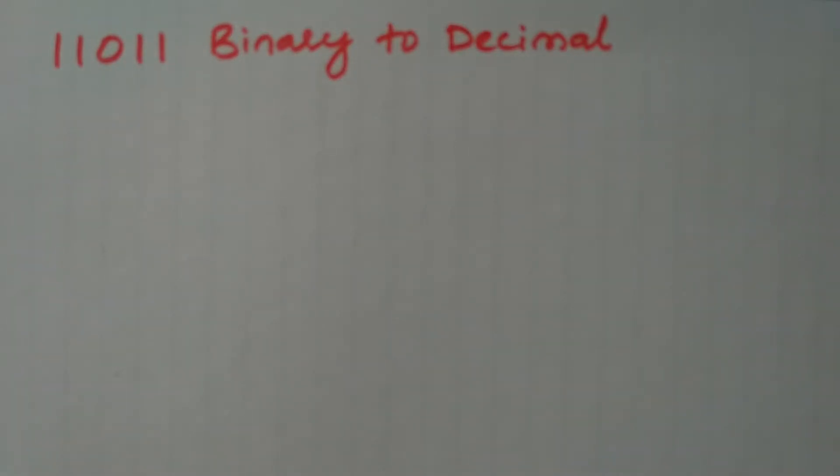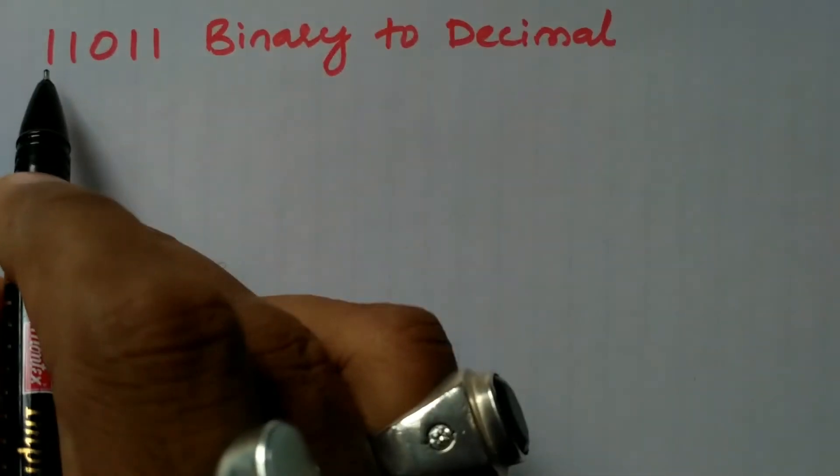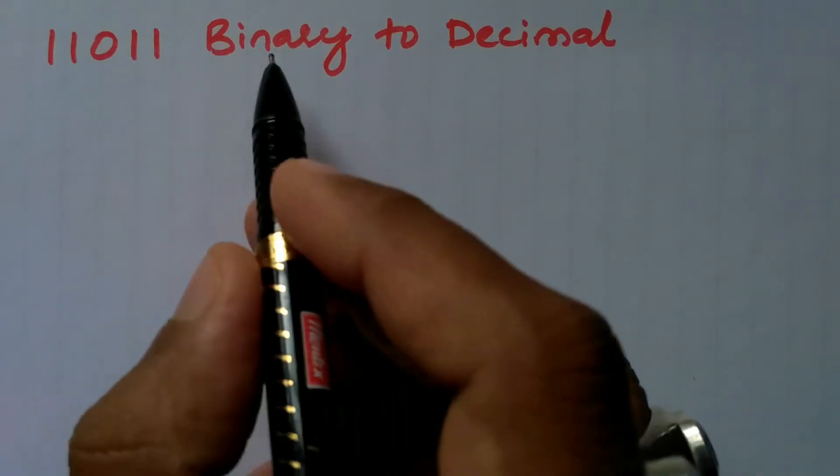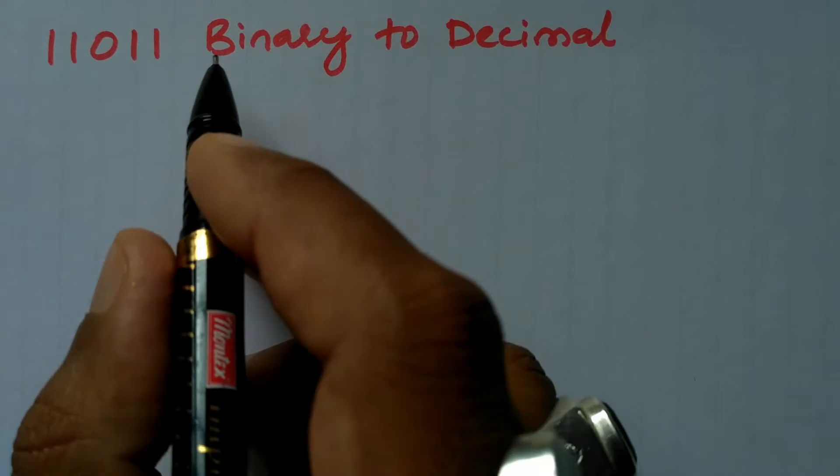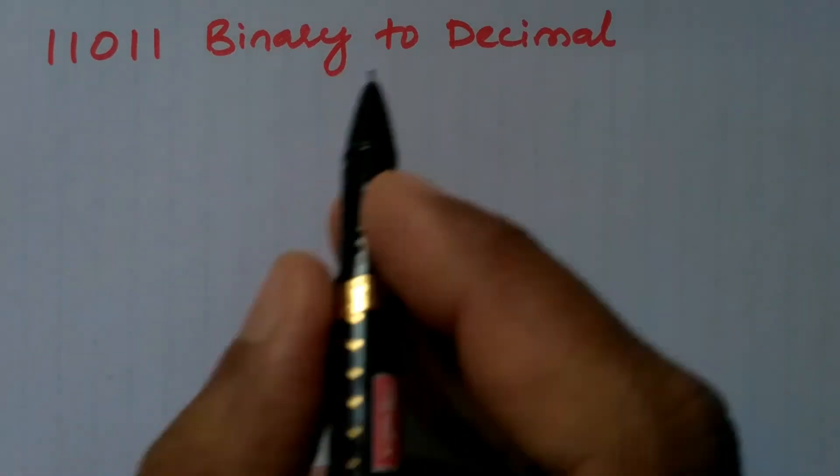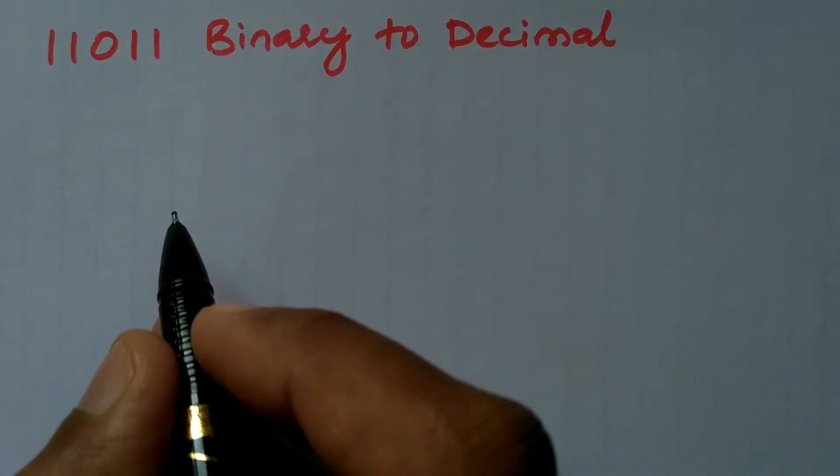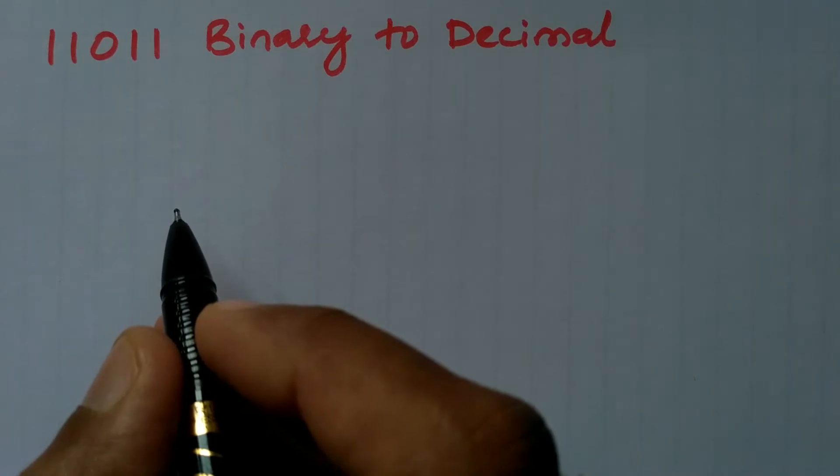Hello and welcome to Vision Academy. In this video, we are going to solve 11011 binary to decimal. Before we convert this given binary number to decimal, let us write the steps or procedures that we need to follow.